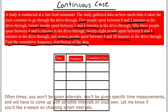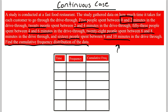Looking at the example: 5 people spent between 0 and 2 minutes in the drive-through, 20 people spent between 2 and 4 minutes, 53 people spent between 4 and 6 minutes, 28 people spent between 6 and 8 minutes, and 16 people spent between 8 and 10 minutes. We fill in the time column with intervals: 0–2, 2–4, 4–6, 6–8, and 8–10. It's assumed nobody took exactly 2, 4, or 6 minutes, so those boundary values are not included in the data.